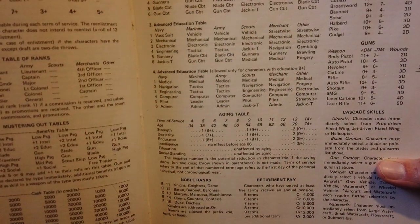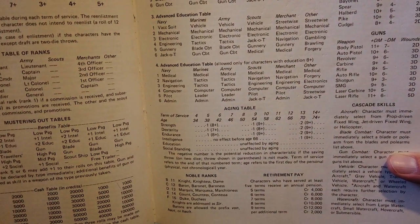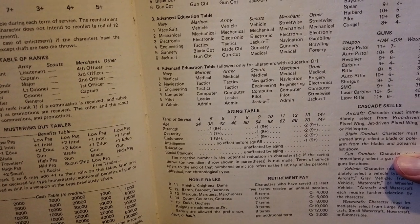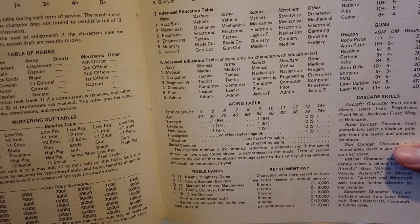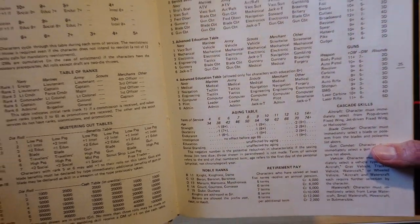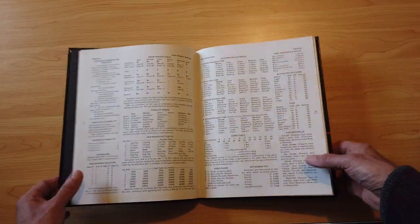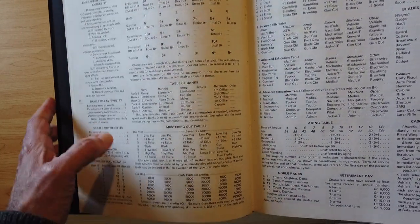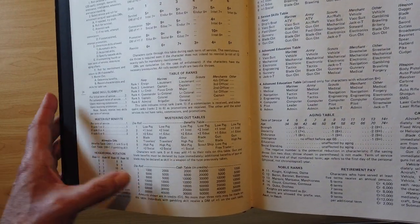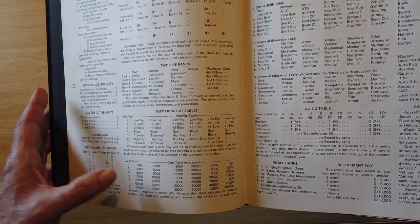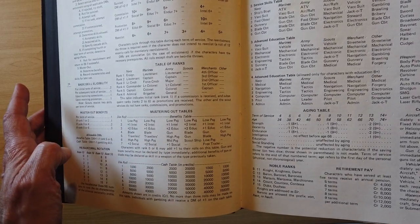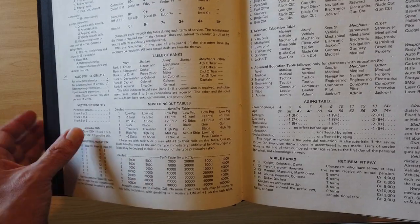And when you get to 34, after you've been in there for four terms, you have to start rolling to see if your strength, dexterity, and endurance start to decrease. Because apparently, in the future, 34 is your decline. When you decide to stop your career, or if you're not allowed to enlist anymore, then you can muster out. And they will give you a variety of tables you can roll on for cash or from abilities. You might be able to increase your intelligence, education. And if you're a merchant or a scout, you actually might get a spaceship, which is pretty cool.